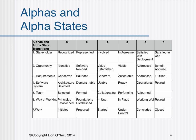Number four, software system — architecture selected, demonstrable, usable, ready, operational, retired.